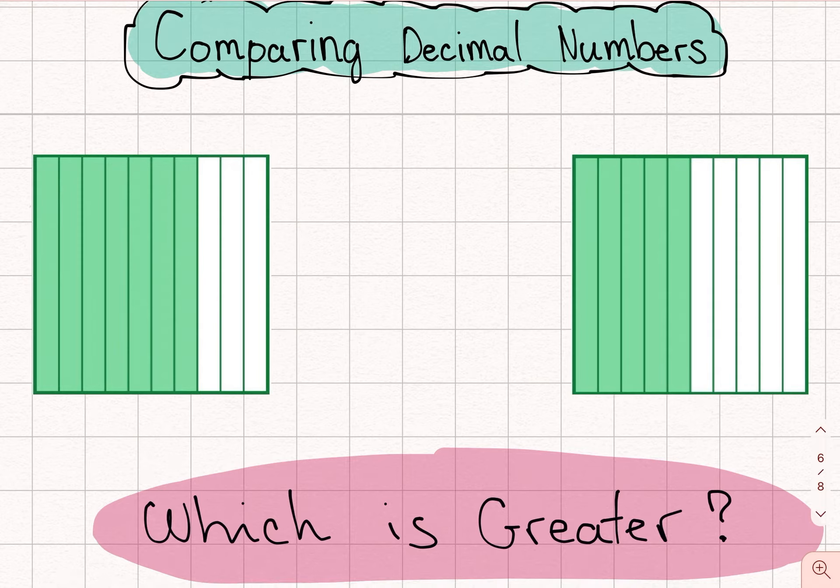Well, the first thing we'll do is let's just recall the signs of inequality. So those look like this. Signs of inequality are signs that we use to show if something is greater than, less than, or equal to.